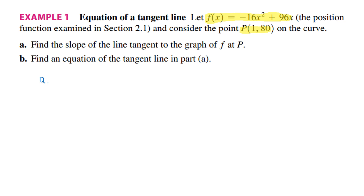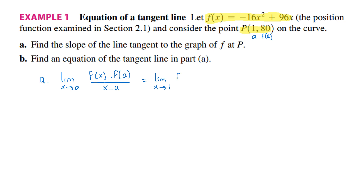So I am going to use the definition: the limit as x goes to a of f of x minus f of a divided by x minus a. Here a is equal to 1, and you can know that from the point — a and f of a are the coordinates of the point. This is equal to the limit as x goes to 1 of f of x minus f of 1 over x minus 1.